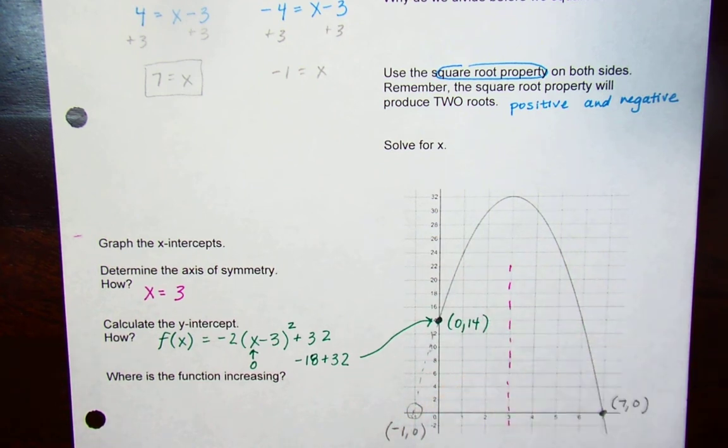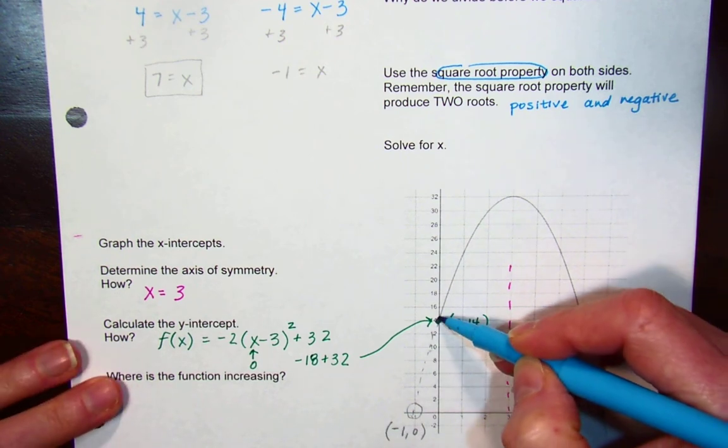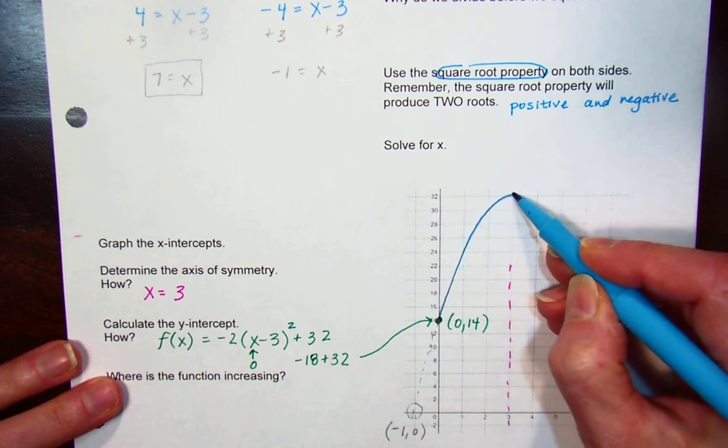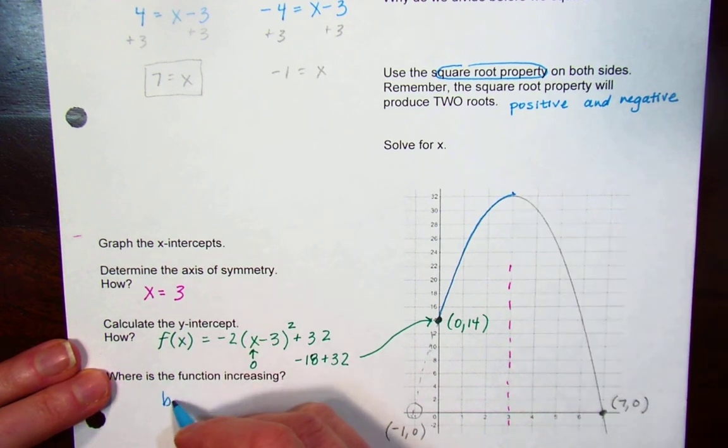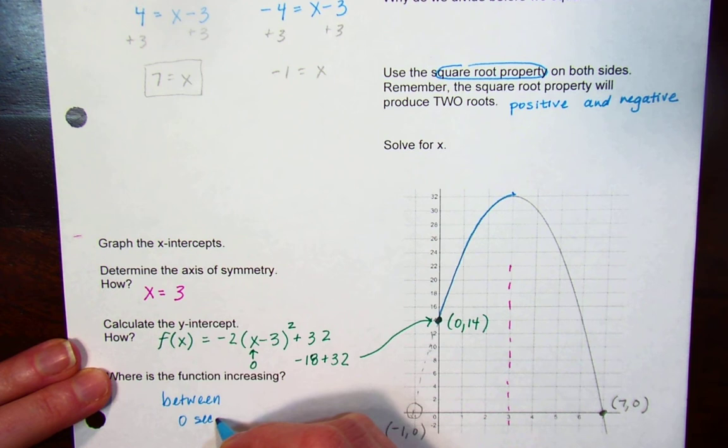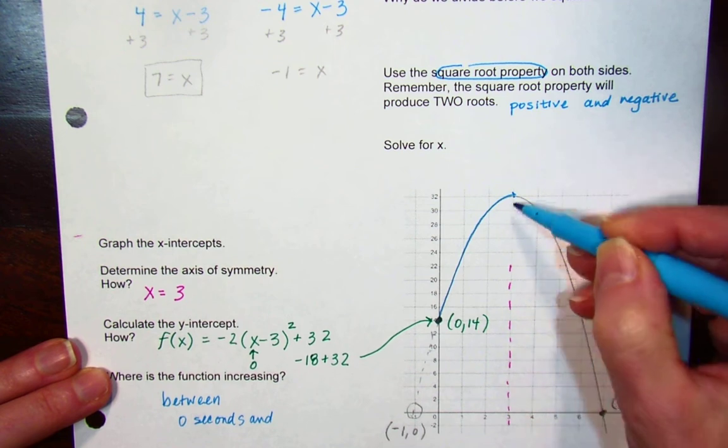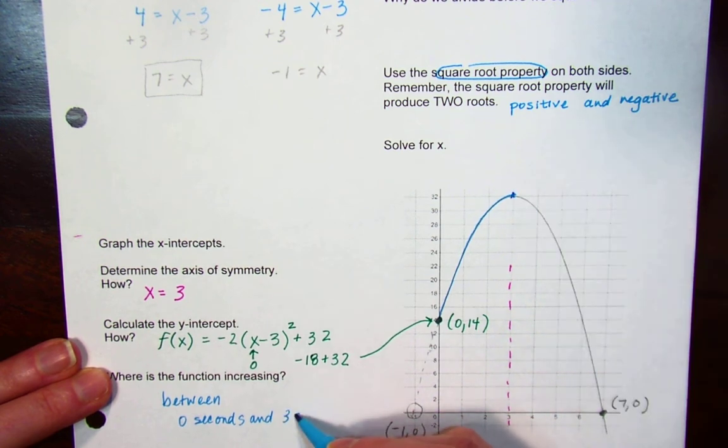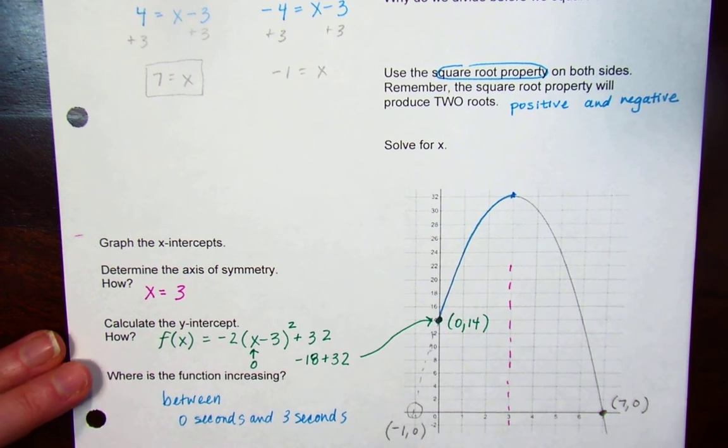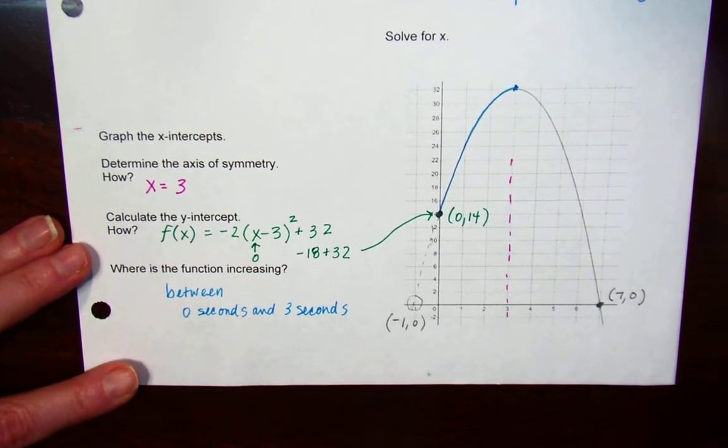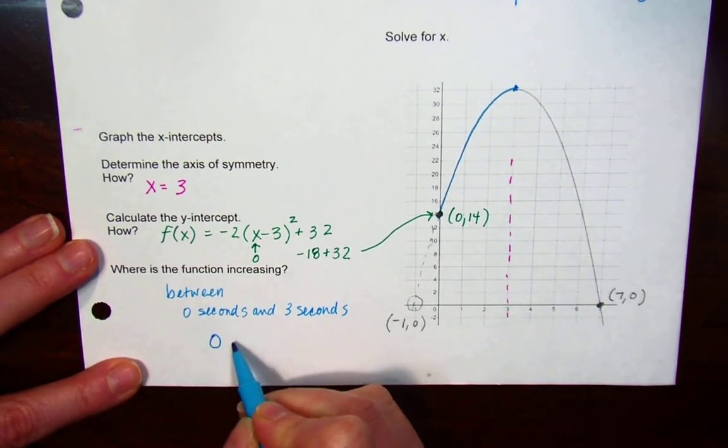And then it says where is the function increasing? The function is increasing in this portion, so you would say between zero seconds and, let's see, it was three seconds.